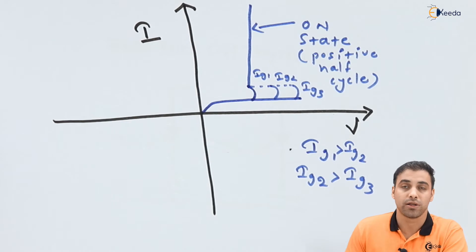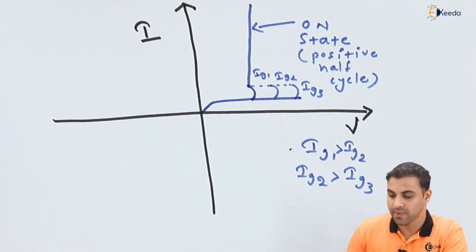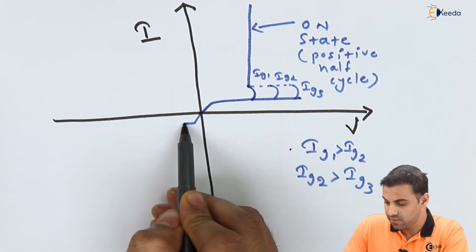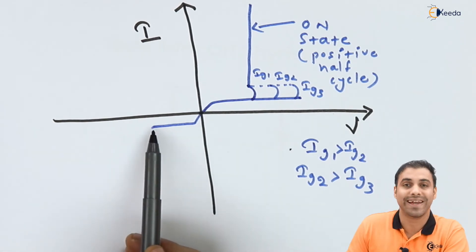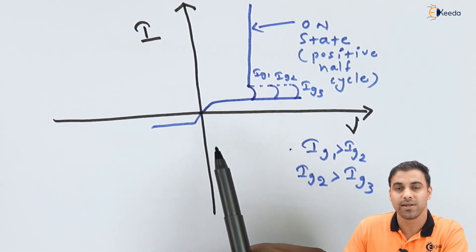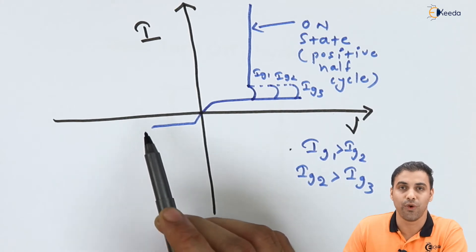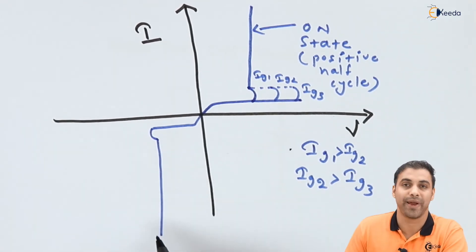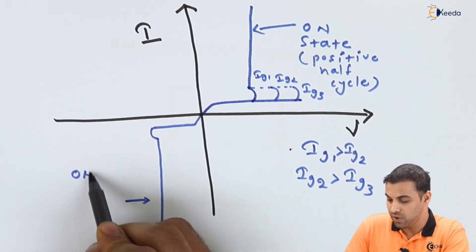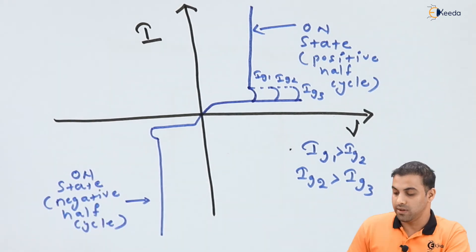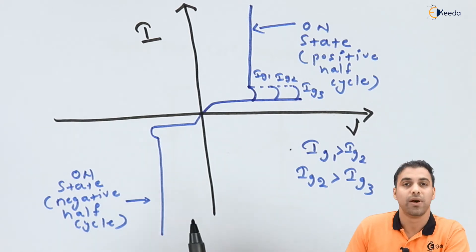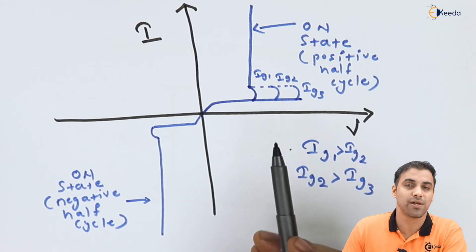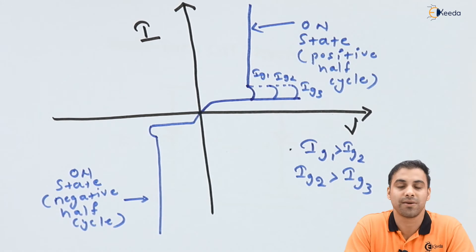Now let's talk about the third quadrant, or the reverse biased condition of a TRIAC. Similarly, when we keep increasing the negative voltage, there will be a small reverse leakage current, just like in the positive half cycle. Once the voltage crosses the reverse breakdown voltage, it will suddenly start conducting and reach its ON state. This is called the reverse breakdown. If the gate current is higher, the time to reach conduction will be faster.